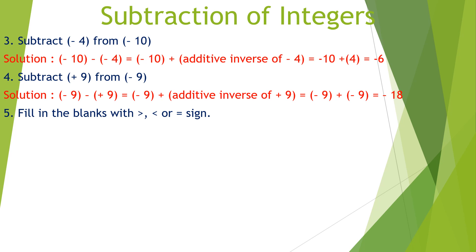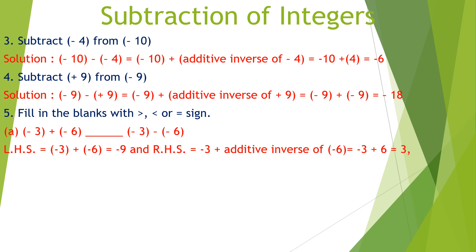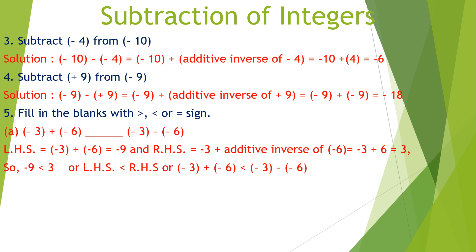Now let's fill in the blanks with greater than, less than, or equal to signs. First: minus 3 plus negative 6 versus minus 3 minus minus 6. The left hand side: minus 3 plus minus 6 equals minus 9. The right hand side: minus 3 plus additive inverse of minus 6 equals minus 3 plus 6, equals 3. So minus 9 is less than 3, and we put a less than sign.